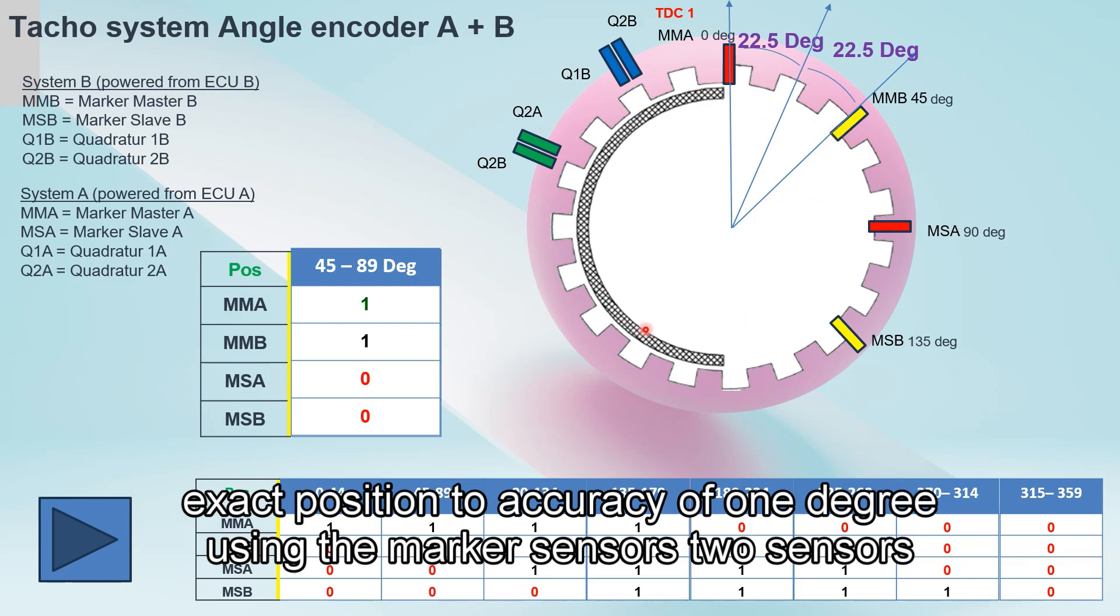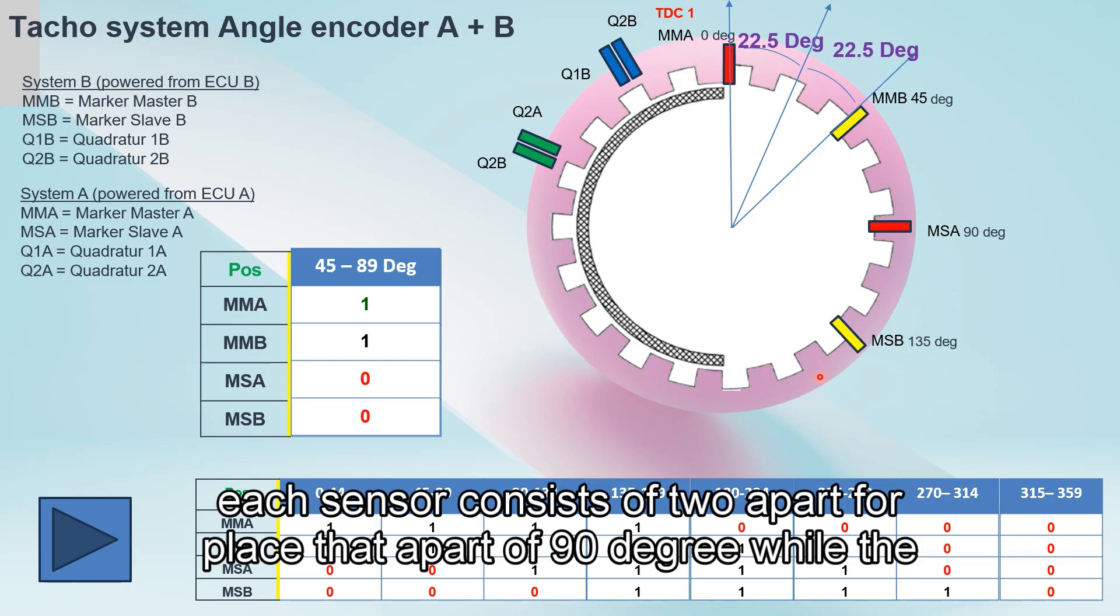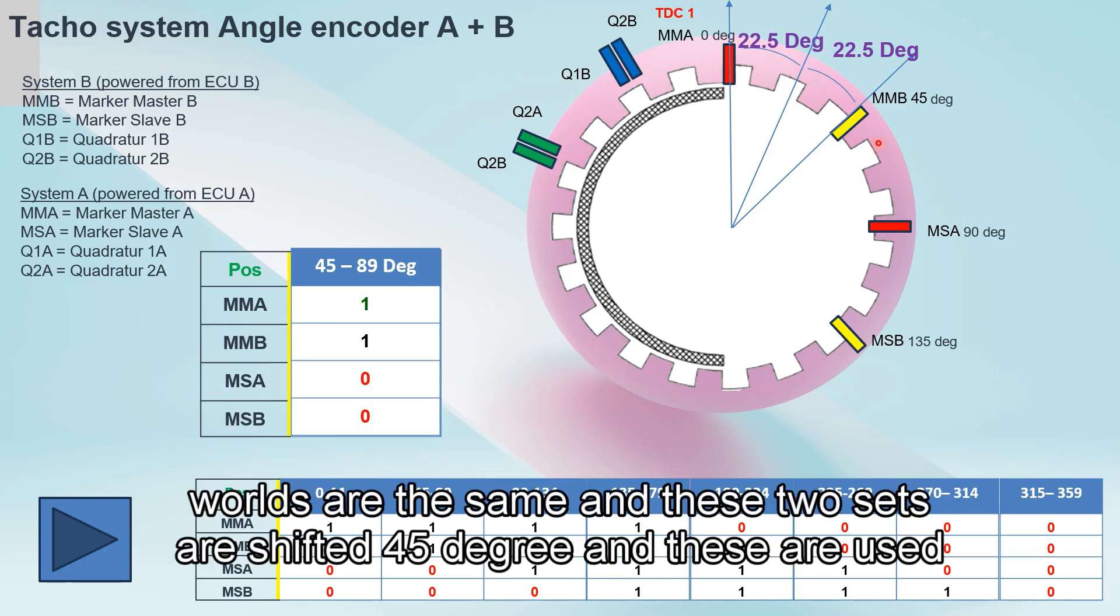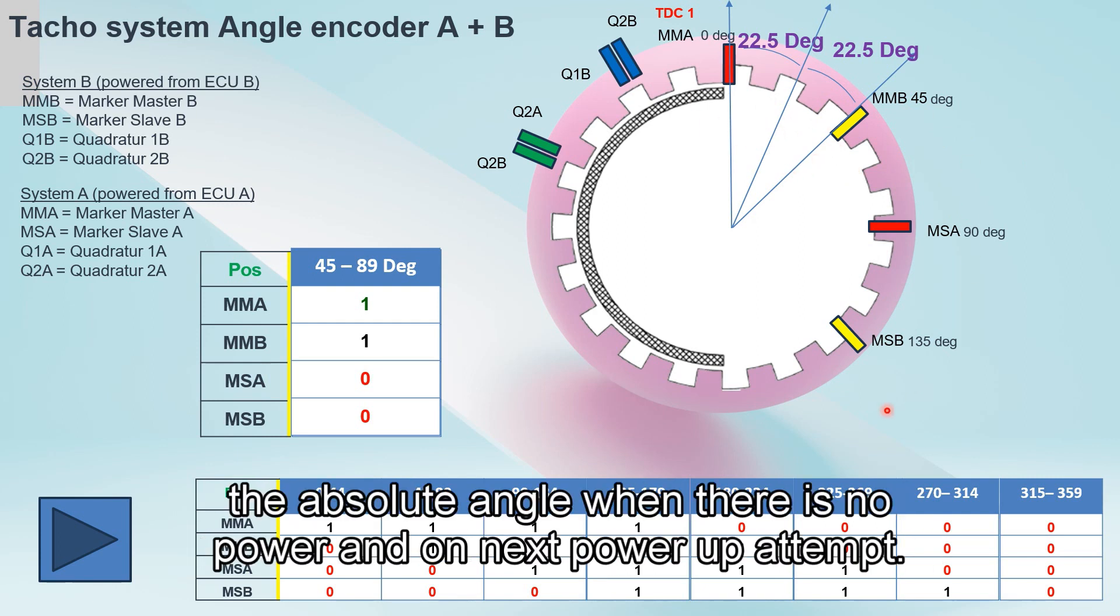Using the marker sensors, two sensors consists of four. Each sensor consists of two apart, placed at a part of 90 degrees, while the other two also the same, and these two sets are shifted 45 degrees. These are used to measure the absolute angle when there is no power and on next power-up attempt.